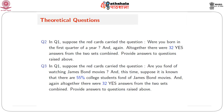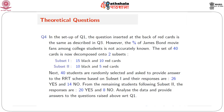Question 3: In Question 1, suppose the red cards carry the question "Are you fond of watching James Bond movies?" and this time it is known that 55% of college students are fond of James Bond movies. With again 32 yes answers from the two sets combined, can you provide an estimate of capital P, the proportion of smokers, and a variance estimate?